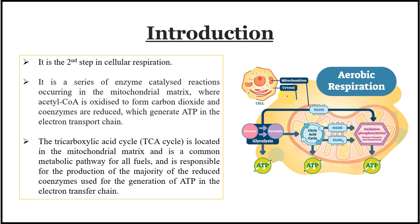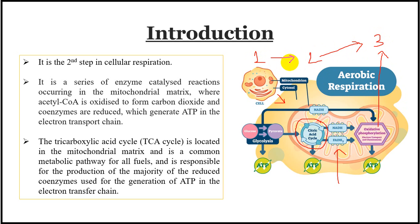As an introduction: glycolysis occurs in the cytosol, while the citric acid cycle occurs in the mitochondrial matrix — that is the second step. The third step will be oxidative phosphorylation. So the three stages are: glycolysis, the citric acid cycle, and oxidative phosphorylation — all interlinked. The TCA cycle is a series of enzyme-catalyzed reactions.